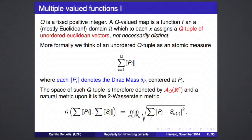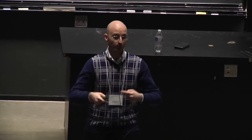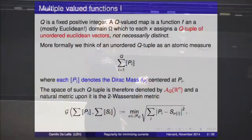Now we want to put a metric on this. By notation, the funny notation here will always be the Dirac mass with center pᵢ, so a q-tuple is written in this way. A natural metric is called the 2-Wasserstein metric — a variation of the Euclidean metric. Since the q-tuples are unordered, for all possible orderings of the q-tuple we construct a vector of dimension n times q, compute the Euclidean norm, and minimize over all possible permutations. That gives the Wasserstein 2 metric.